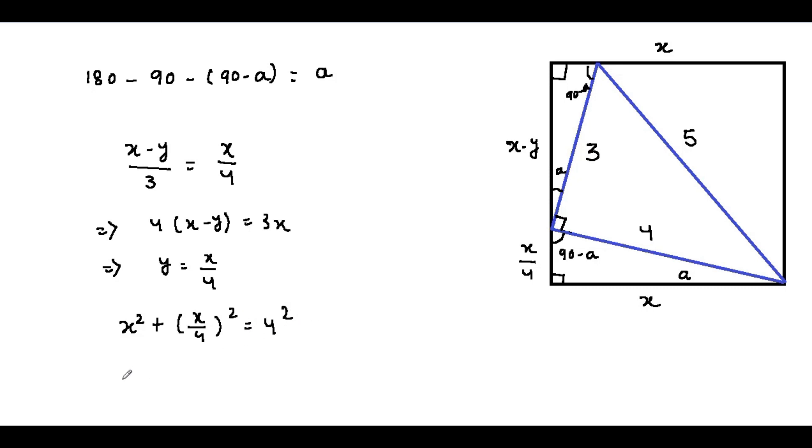Now by simplifying this, we can get 17x squared divided by 16 equals 16. So if we solve for positive x, we can get x equals 16 divided by the square root of 17. And that's the answer.